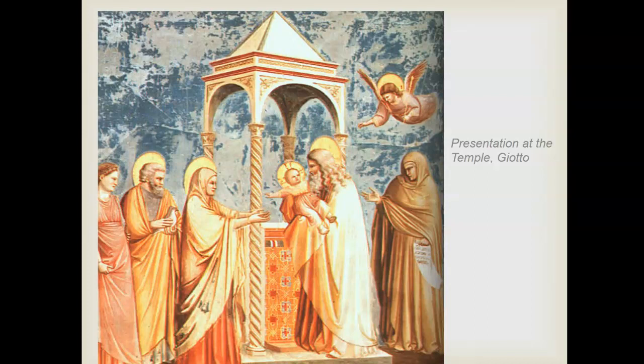This next work is called Presentation at the Temple, and the artist is actually really significant. This is Giotto, who is often described as an artist significant because he is moving in the late Middle Ages toward the Renaissance — placing him in the late 1200s. This painting depicts a Jewish custom: Jesus Christ, who is this divine figure in the Christian tradition, is born as a Jew and goes through various Jewish customs. What Giotto is displaying here is a presentation of the baby to a rabbi, and the rabbi is giving the baby back to Mary, who is Jesus's mother.